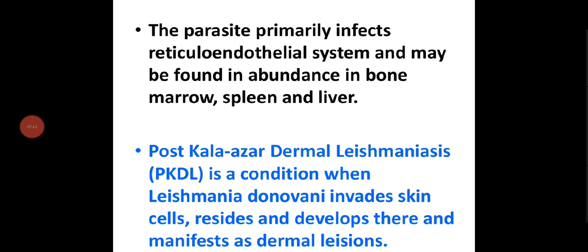The parasite primarily infects the reticulo-endothelial system and may be found in abundance in bone marrow, spleen, and liver.